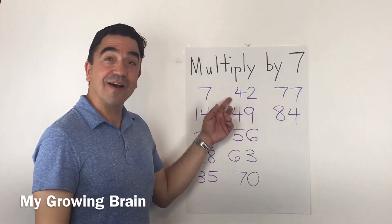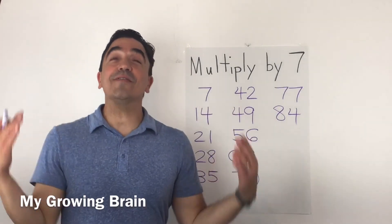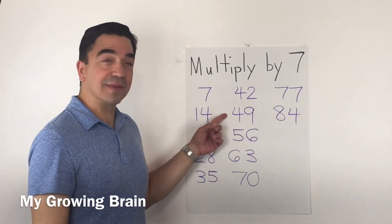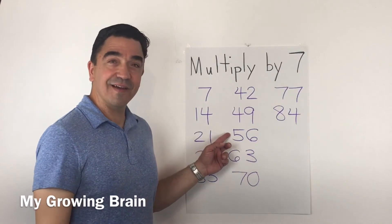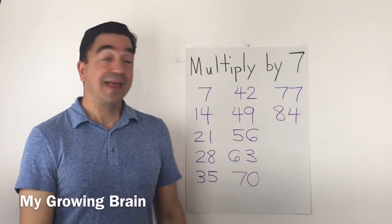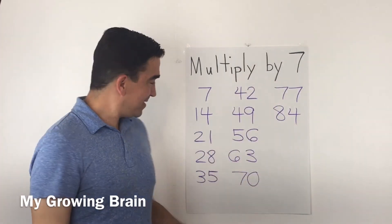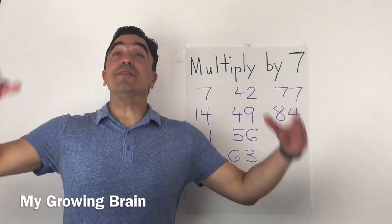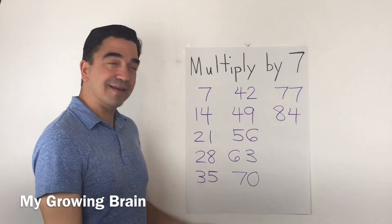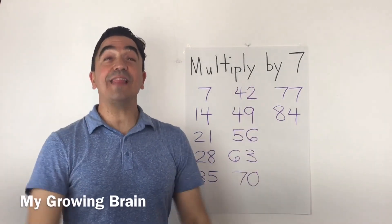Forty-two. Seven times seven, forty-nine. Seven times eight, fifty-six. Seven times nine, sixty-three. Seven times ten, seventy. Seven times eleven...